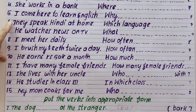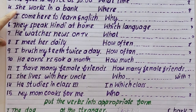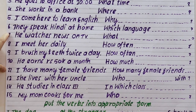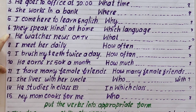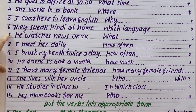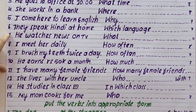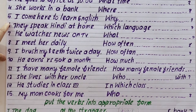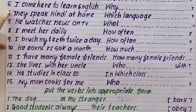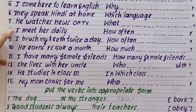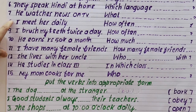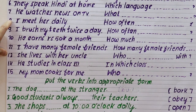Where does she work? Note: works, not work. Where does she work? She works in a bank. Number five: I come here to learn English. Why do you come here?